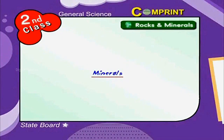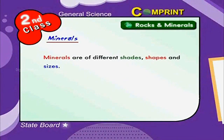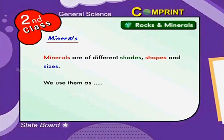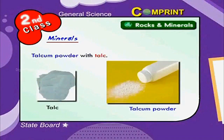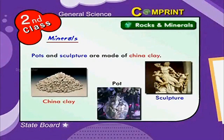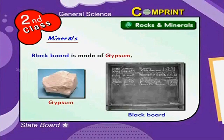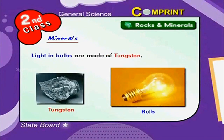Minerals. Minerals are of different shades, shapes and sizes. We use them in various ways: mirrors are made of silver and silica, talcum powder is made with talc, pots and sculptures are made of china clay, blackboards are made of gypsum, and light bulbs are made of tungsten.